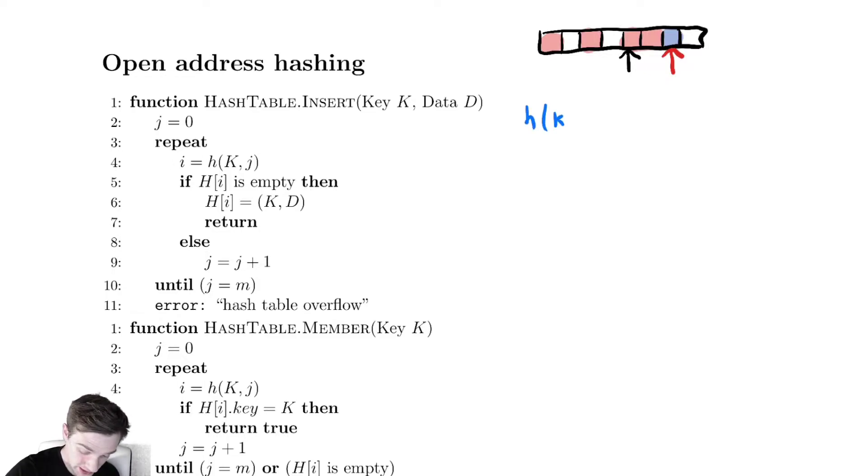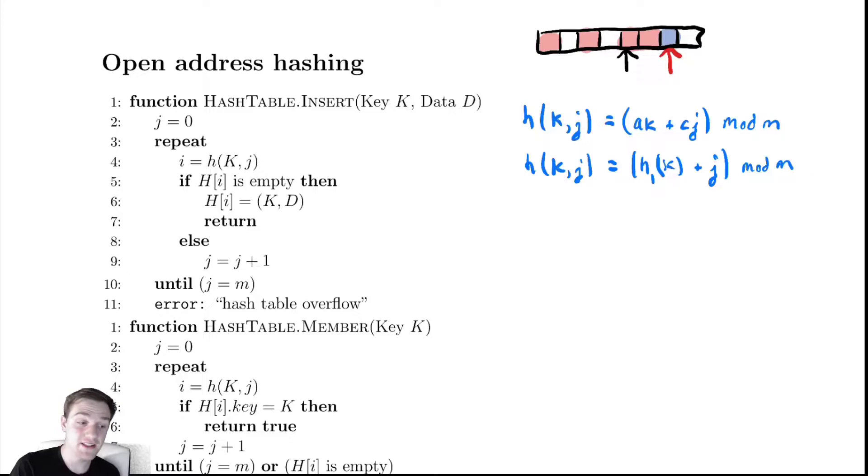h(k,j) might look like ak + c*j mod m. This is linear hashing. You could also do h(k,j) equals some hash function h1(k) + j mod m.